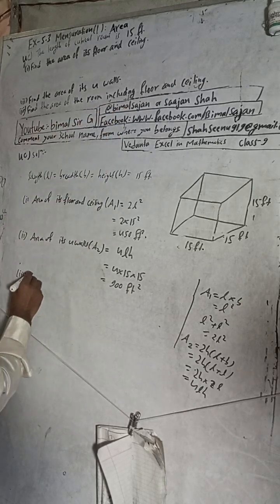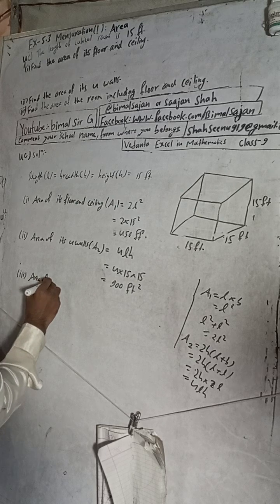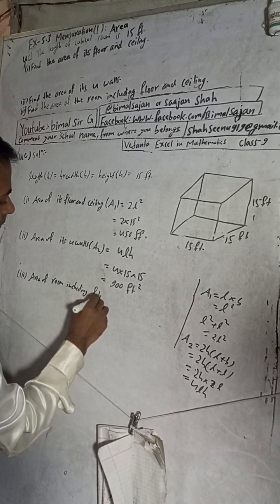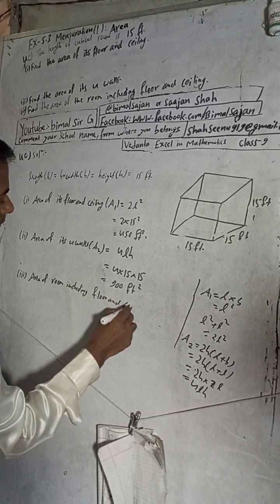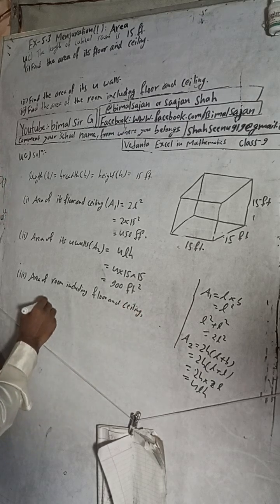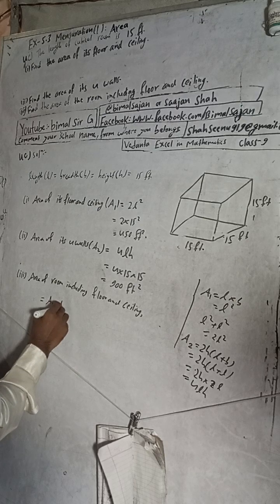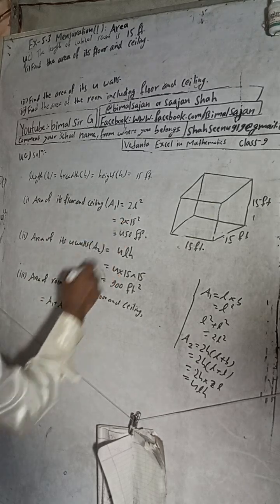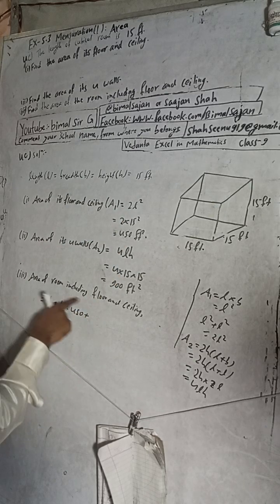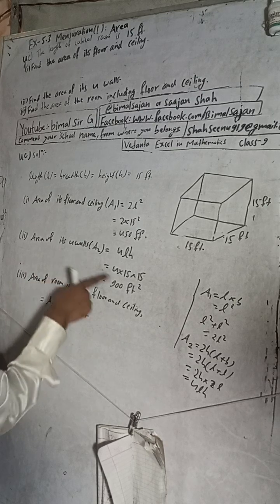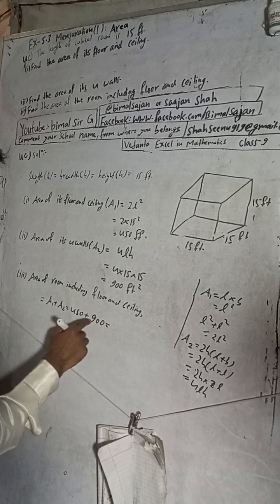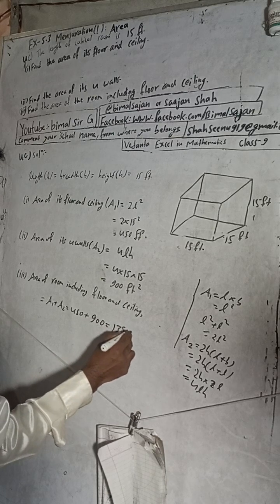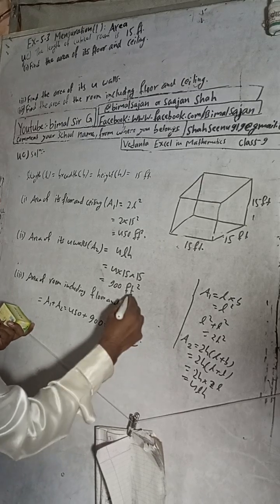Number three: find the total area of the room including floor and ceiling. This equals A1 plus A2. The area of floor and ceiling is 450, plus the area of four walls which is 900. So 450 plus 900 equals 1350. The total area of the room is 1350 square feet.